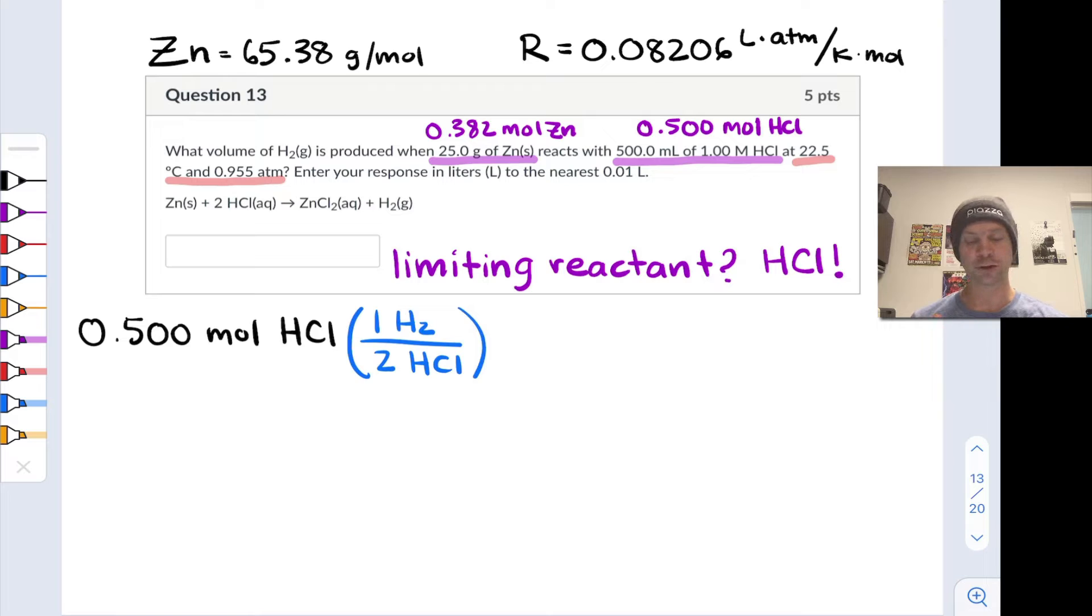And we're using the molar ratio between H2 and HCl here. One H2 produced for every two HCls consumed. And this leads us to the conclusion that 0.250 moles of H2 will be produced in this reaction. And all that's left now is to figure out what volume that corresponds to under the conditions underlined in red, 22.5 degrees Celsius and 0.955 atmospheres.